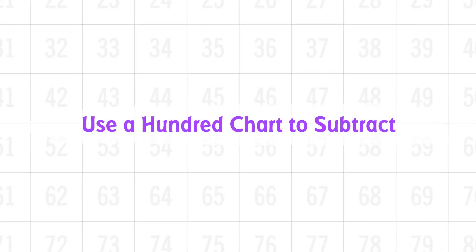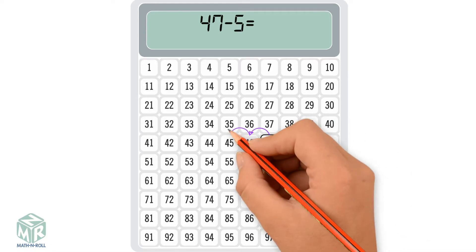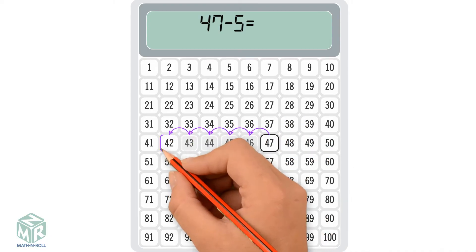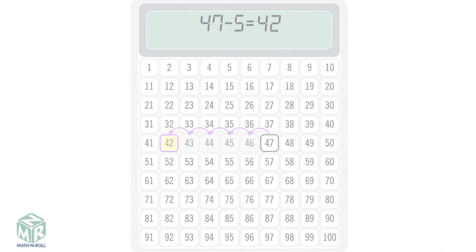Use a 100 chart to subtract. 47 minus 5. We start at 47, move left, or subtract 5 ones. We get 42, so 47 minus 5 equals 42. Let's try another example,